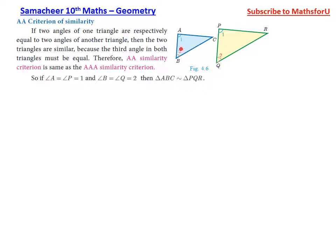For example, if two angles are 60 and 30 degrees, the third angle is 90 degrees. If two angles are 30 and 20 degrees, then 180 minus 50 gives 90 degrees for the third. So if two angles are equal, automatically all three angles are equal. That's why the AA similarity criterion holds.